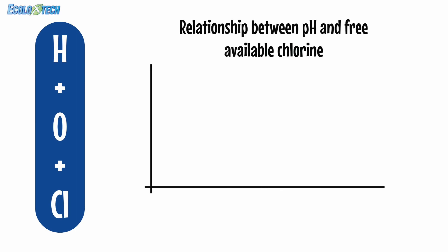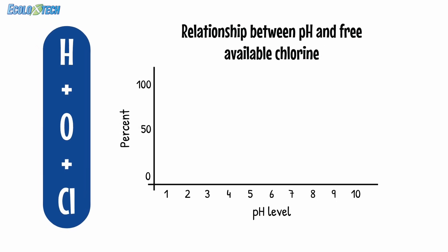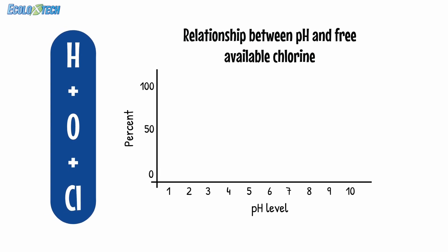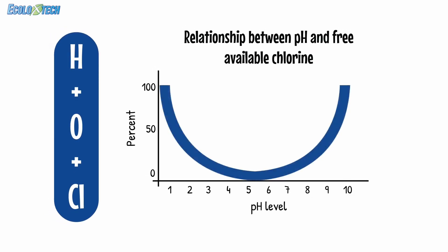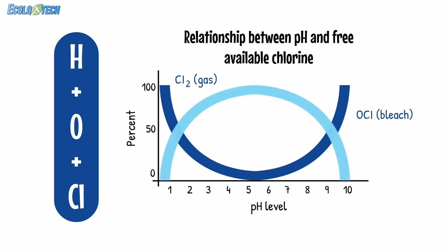Now that we've taken a look at the basics, it's time for a quick chemistry lesson. Hypochlorous acid is a member of the chlorine family and is made up of hydrogen, oxygen, and chlorine molecules. Free available chlorine exists in three forms: as chlorine gas around pH 0 to 3, as hypochlorous acid around pH 4 to 7, and as hypochlorite around pH 8 to 14.